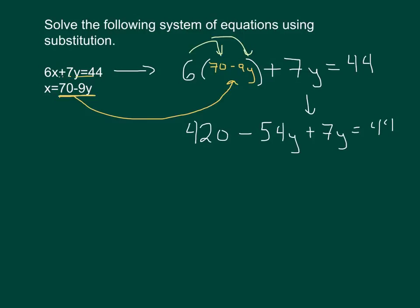And now I'm going to combine like terms. I take a look over here on this left side, and you see I've got a negative 54y and a positive 7y. I can put those together, and that's going to give me a negative 47y. So I have 420. Negative 54y plus 7y is a negative 47y. And then equals, I still have a 44 over here.